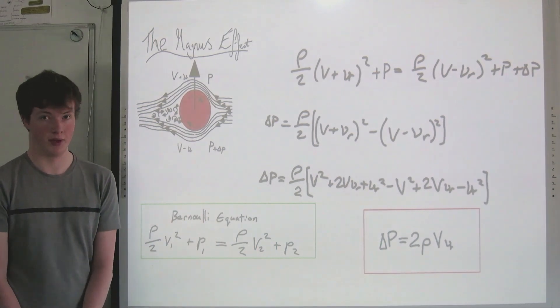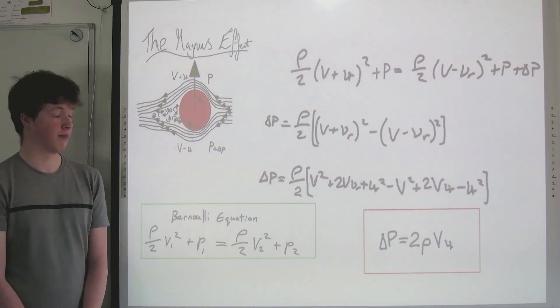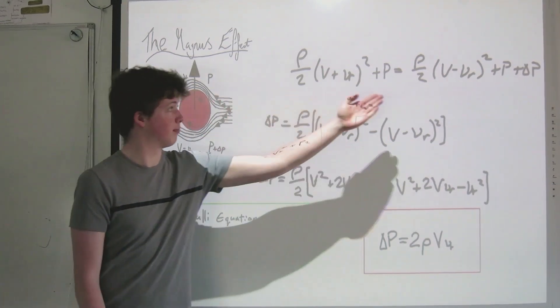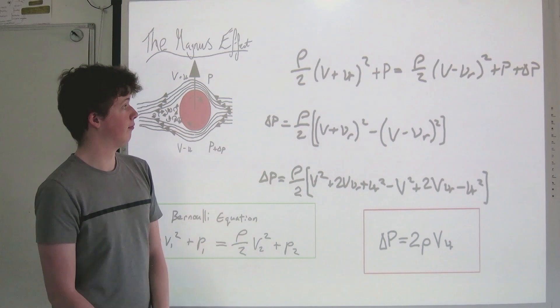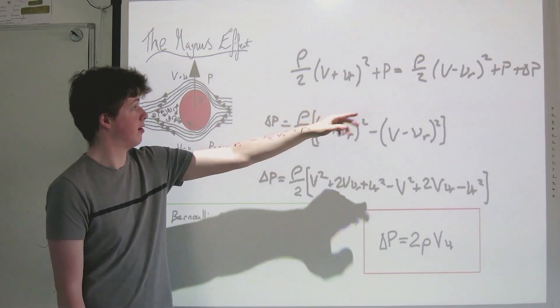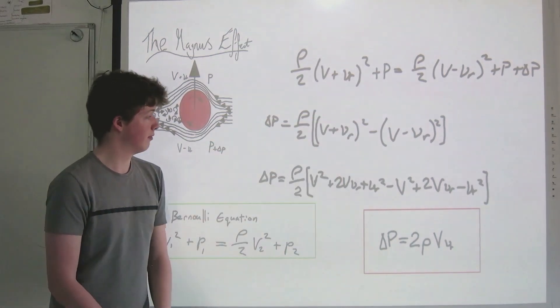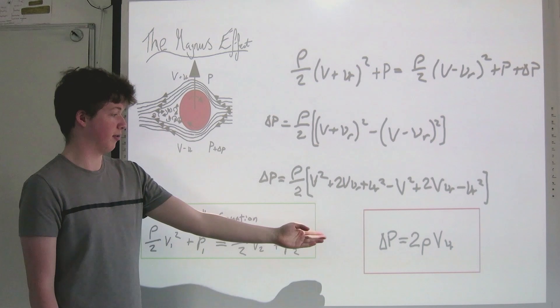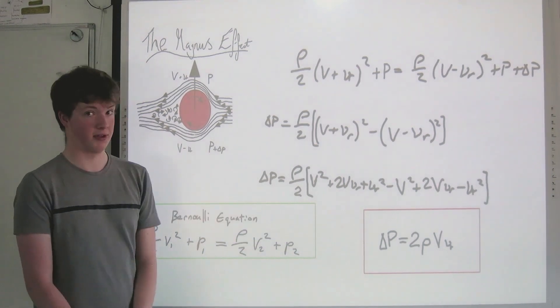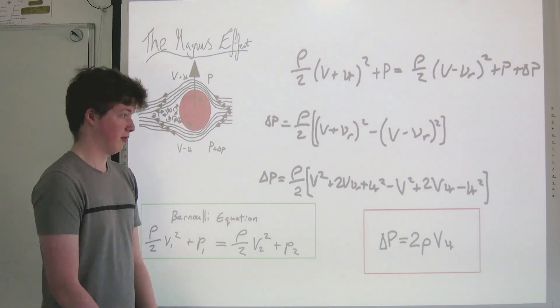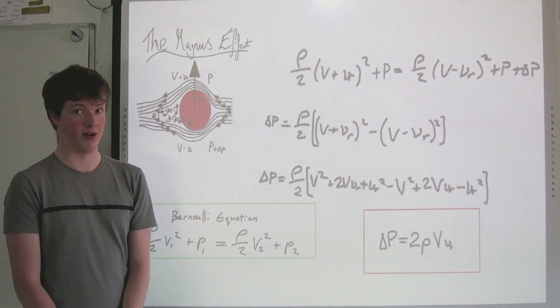I've ignored any terms that relate to gravitational potential energy of the fluid because the flow is horizontal. We first find this expression shown here. We can then move from this side to this side and cancel p. Simplifying this expression gives us delta p is equal to 2ρ, that is the density of the air, multiplied by v, the airspeed, multiplied by vr, the rotational velocity of the ball.